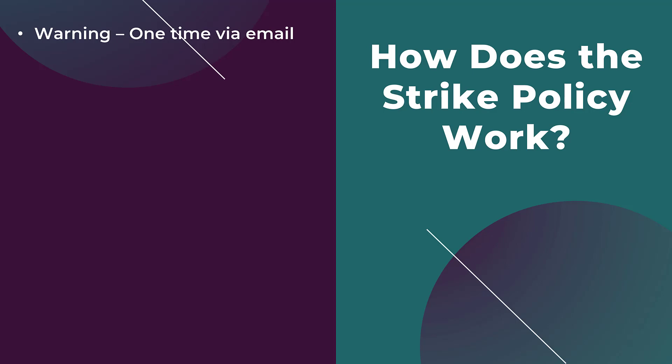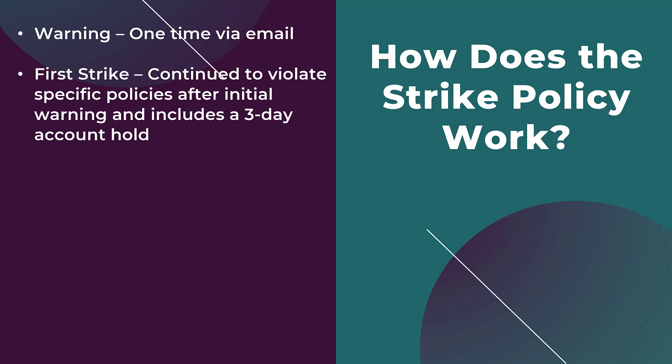There is no downtime to any of your campaigns if you only get a warning. You want to fix those quickly so you don't get to a first strike. Your first strike will occur if Google finds out that you're continuing to violate the specific policies after receiving your emailed warning. Once you get to the first strike, this will be the first instance where your account will be put on hold — and the hold for a first strike is three days. If you don't make any attempt to correct the policy violations within those three days, your account will continue to be on hold until you fix them.